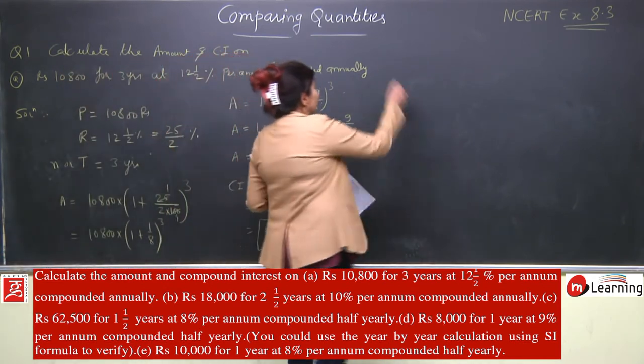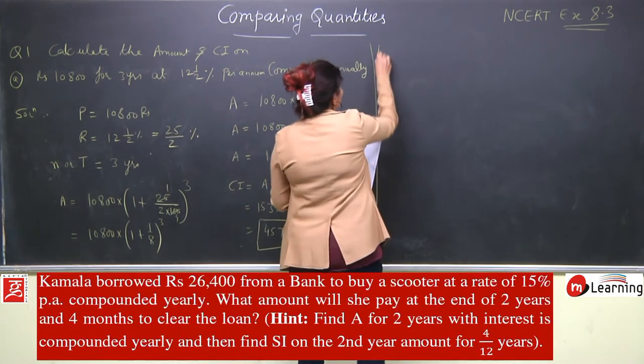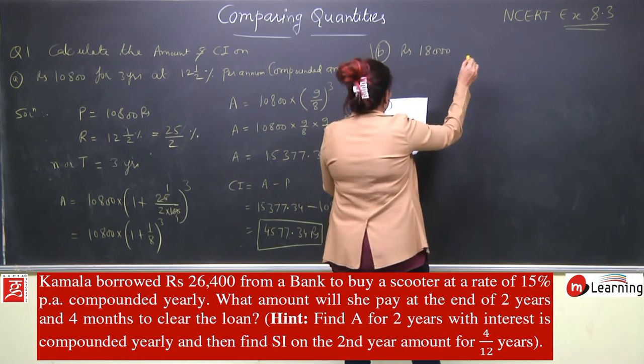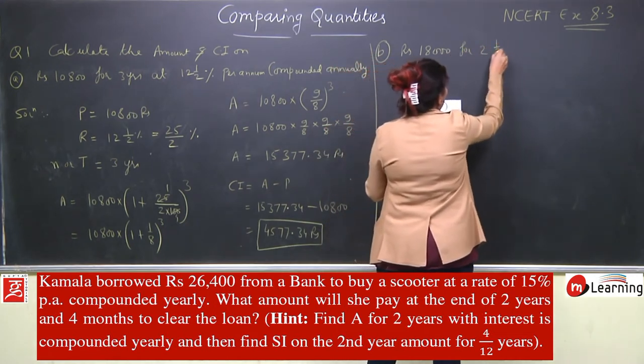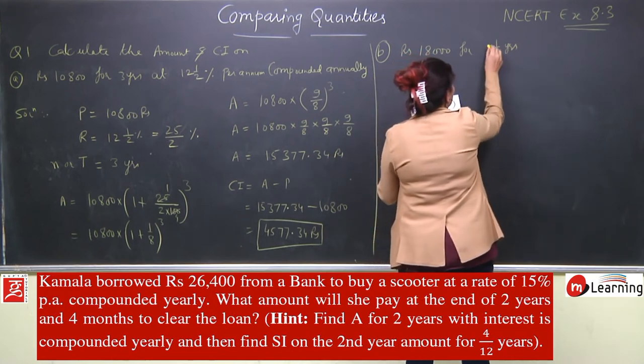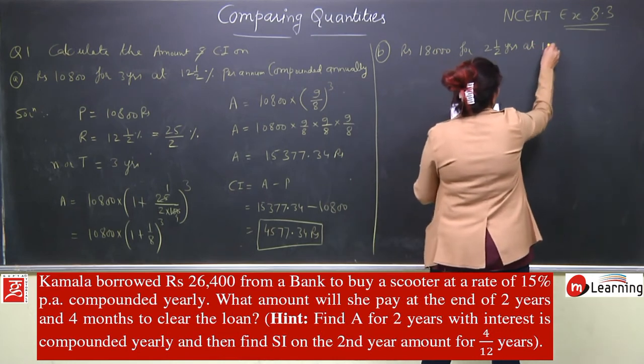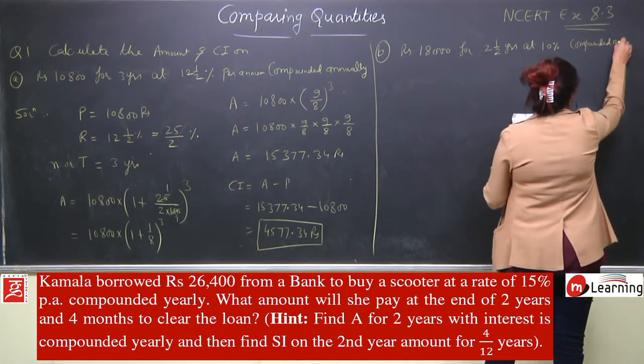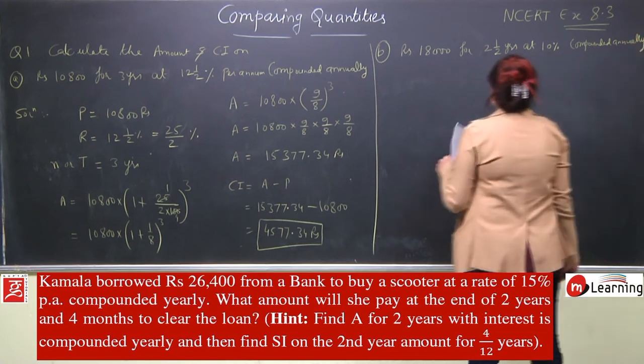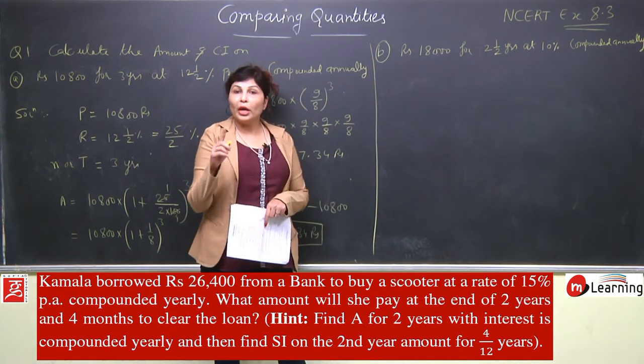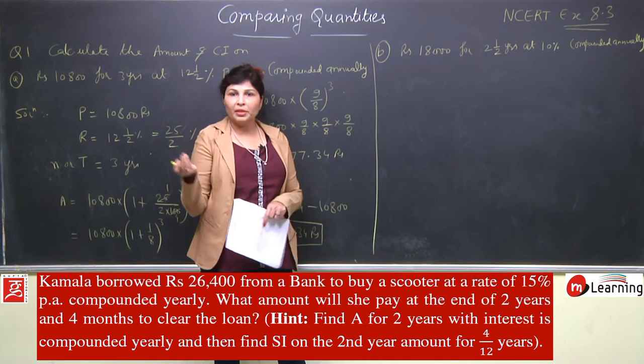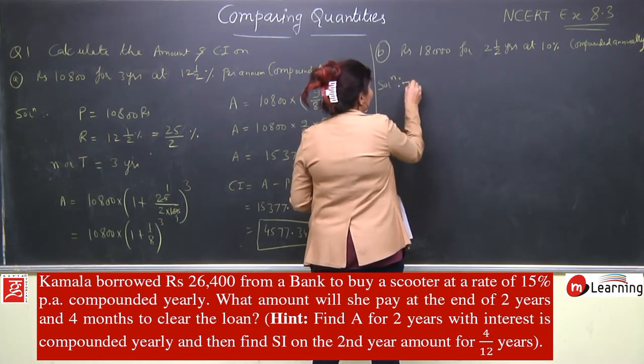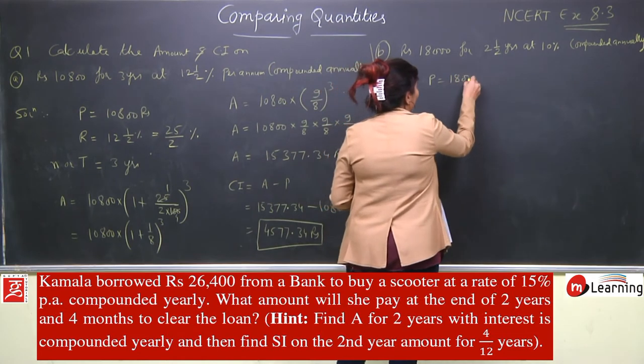Second question: Part (b) - Rs 18,000 for 2.5 years at 10% compounded annually. Notice carefully, the time given is 2.5 years, which is a fraction. Let's see why we need the new formula I taught you.